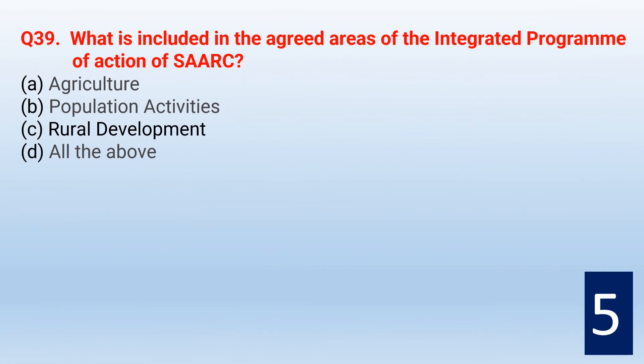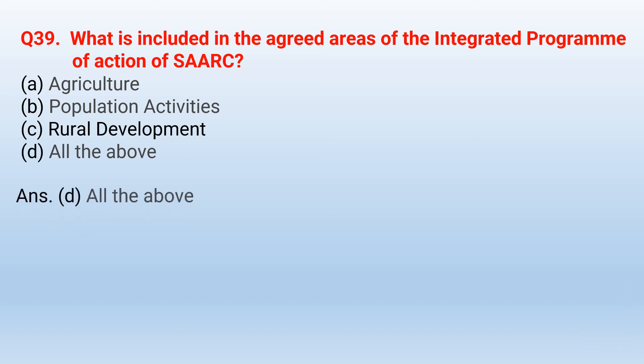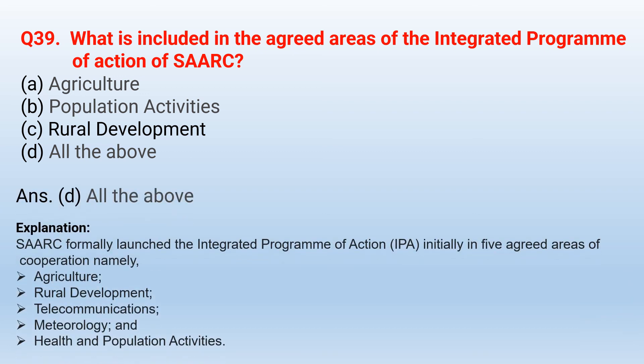What is included in the agreed areas of the Integrated Program of Action of SAARC? The options include agriculture, population activities, rural development, and all the above. The correct option is all the above. SAARC formally launched the Integrated Program of Action initially in five agreed areas of cooperation: agriculture, rural development, telecommunications, meteorology, and health and population activities.